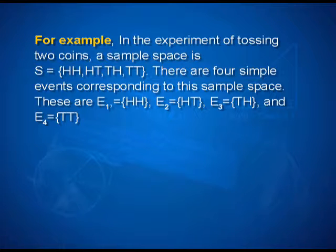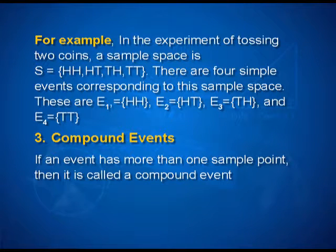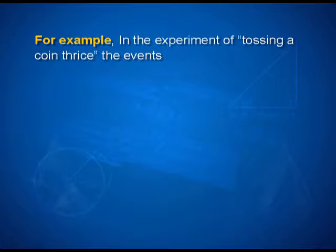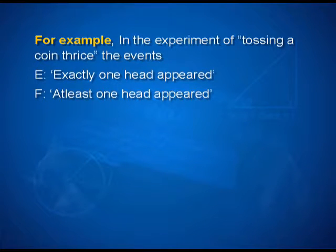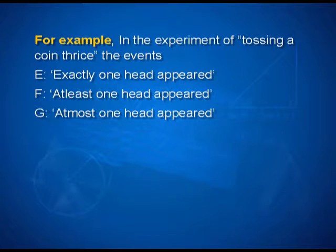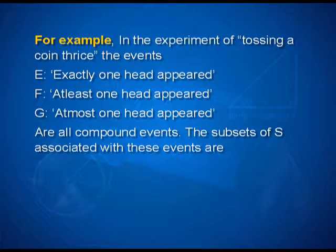Now let us see what we mean by a compound event. If an event has more than one sample point, then it is called a compound event. For example, in the experiment of tossing a coin thrice, the events E — exactly one head appeared — F — at least one head appeared — G — at most one head appeared — and so on are all compound events.